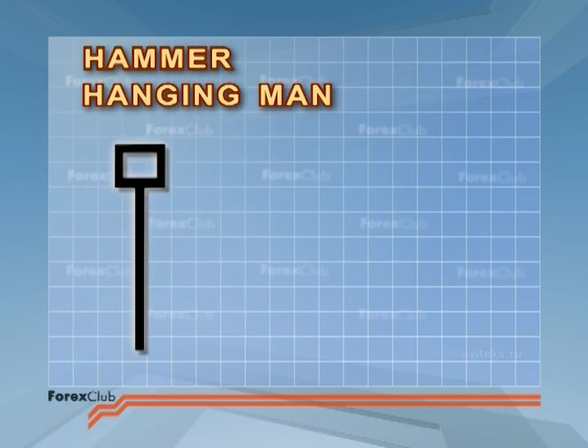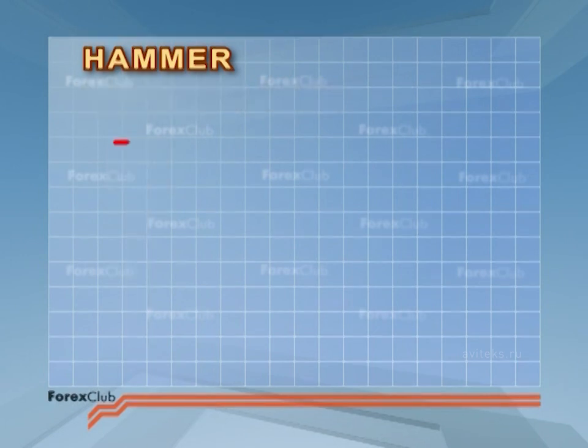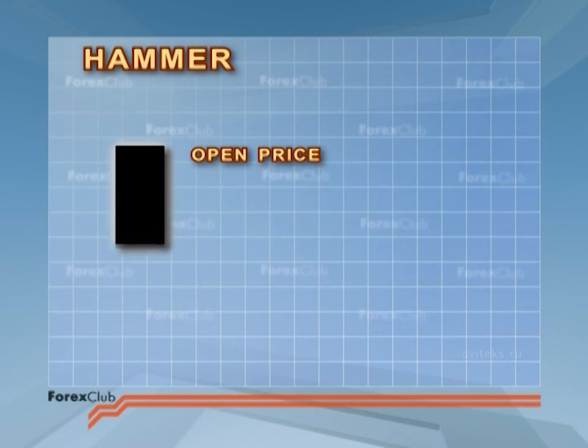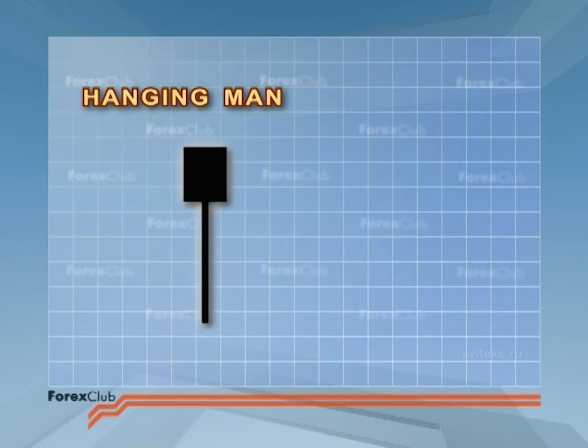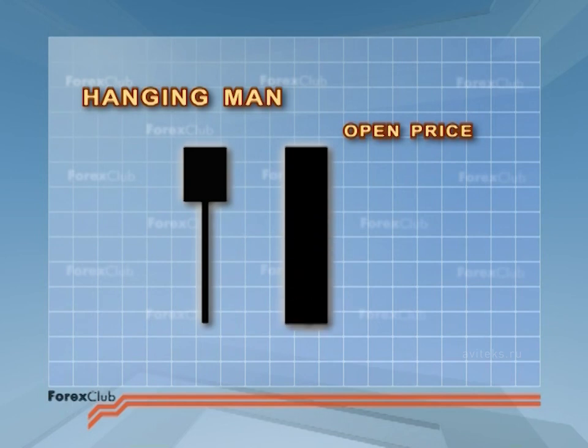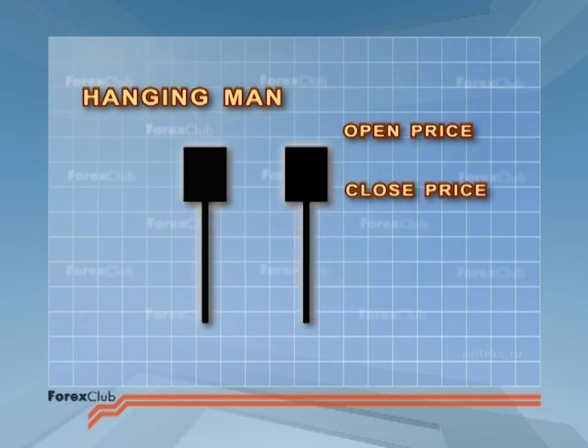Though the bodies can either be black or white, a white hammer body tells us that during the period prices fell, but then a revival began, with price closing near the high. It says that the bull enthusiasm is strengthening. A black hanging man says that the closing price could not return to the opening price level. The long lower shadow illustrates the bull's nervousness. Altogether, it points to the strengthening of the bears.